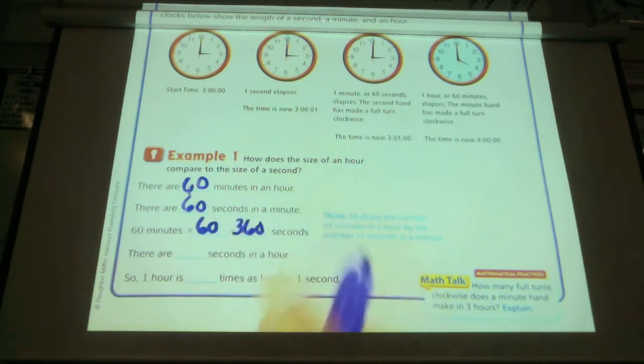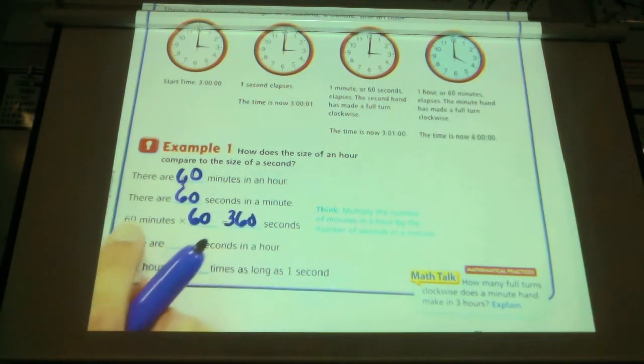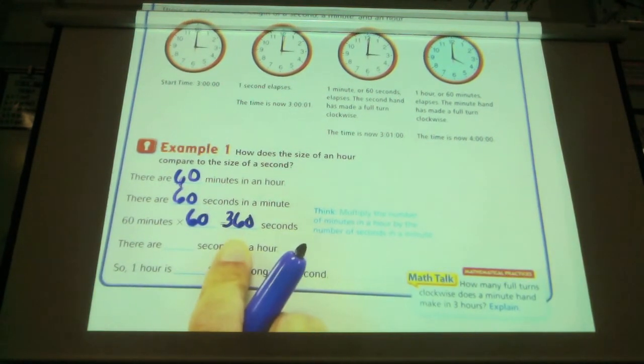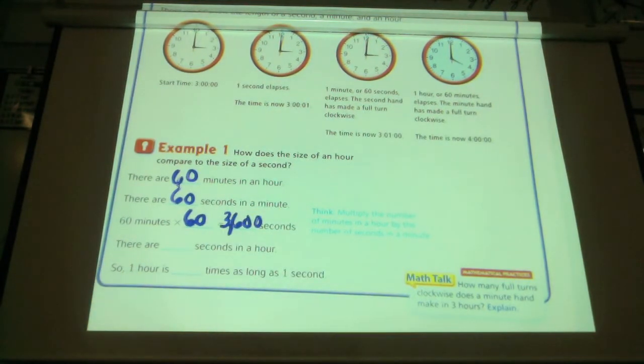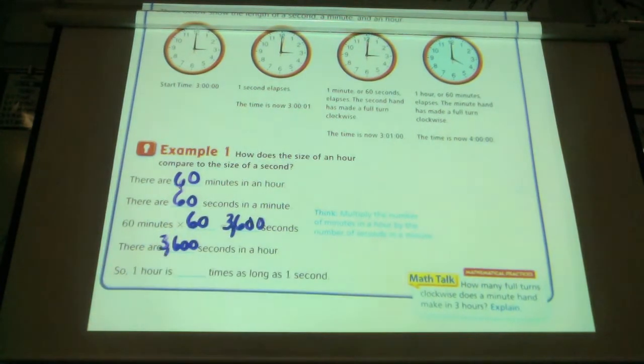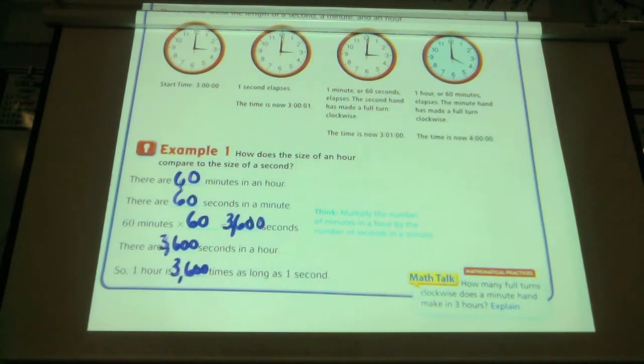So, if I have 6 times 60, that's 360. Now, I actually had 60 times 60 here. So, now I have to multiply 360 times 10, which will give me what, Andy? Three thousand and six hundred. Three thousand and six hundred. And that's our answer. So, there are three thousand and six hundred seconds in an hour. So, an hour is three thousand and six hundred times as long as a second.